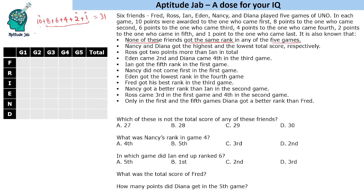If we subtract each missing value from 31, we get the six possible total scores: subtract 1 gives 30, subtract 2 gives 29, subtract 4 gives 27, subtract 6 gives 25, subtract 8 gives 23, and subtract 10 gives 21. So the six possible totals are 30, 29, 27, 25, 23, and 21. One question can be answered right away: 28 cannot be the total score of any friend.